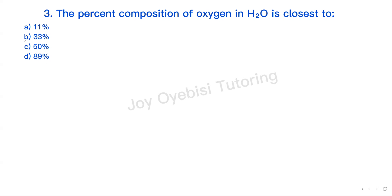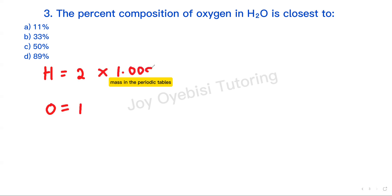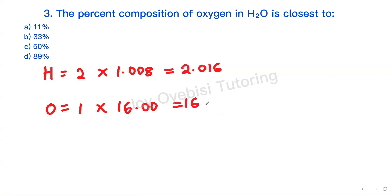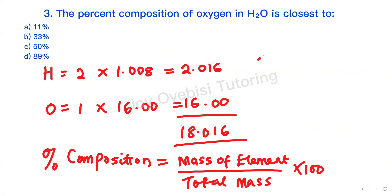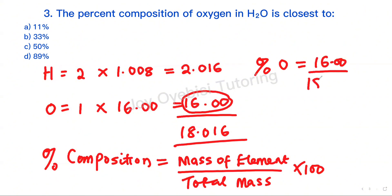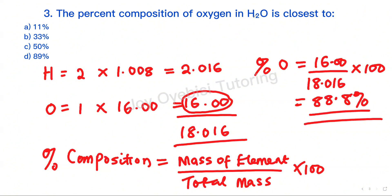Question 3: The percent composition of oxygen in water is closest to which option? We start by writing out the elements and their numbers. We have 2 hydrogens times 1.008, and 1 oxygen times 16. This gives 2.016 and 16, with a total molar mass of 18.016 grams per mole. Percent composition equals the mass of the element over the total mass times 100. So percent oxygen equals 16 divided by 18.016 times 100, giving us 88.8%, which is closest to 89% — answer option D.